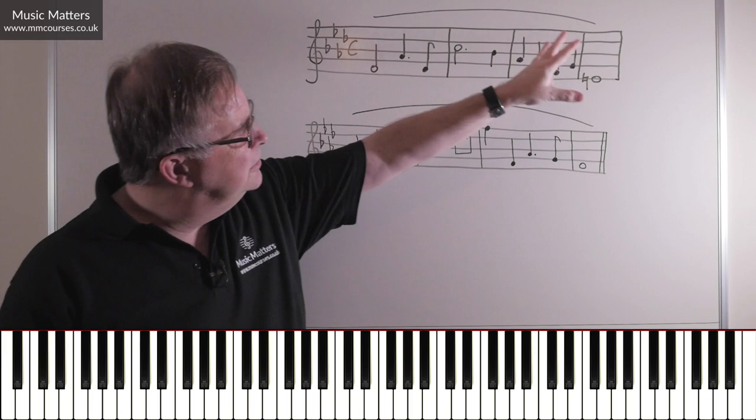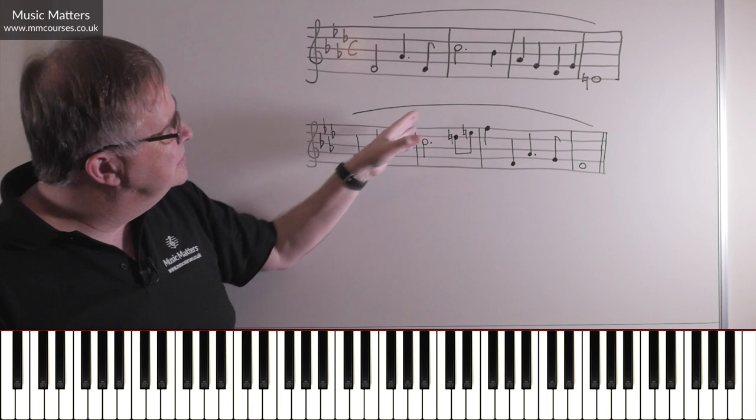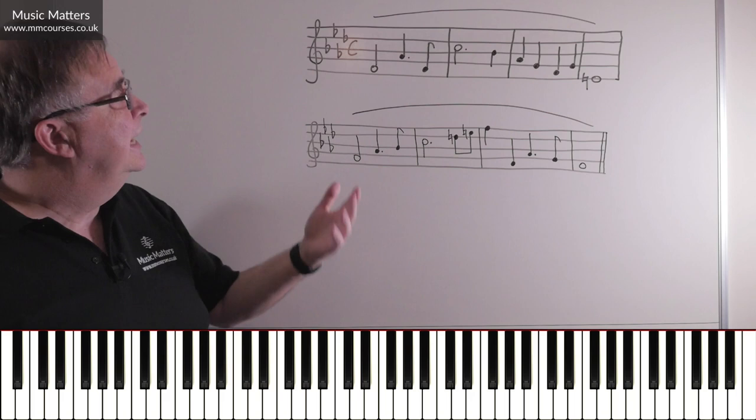So here we are in F minor, a phrase that starts on the tonic, kind of goes to an E natural, the leading note, so that's suggesting some kind of imperfect cadence, comes back to the tonic, starts in the same way as the first phrase, goes in a slightly different direction, and finishes on what's likely to be a perfect cadence in F minor. This is how it goes.